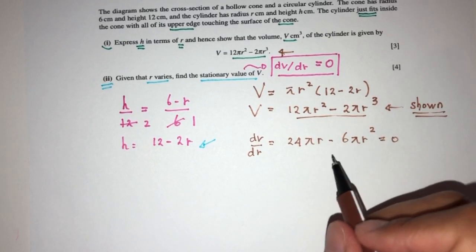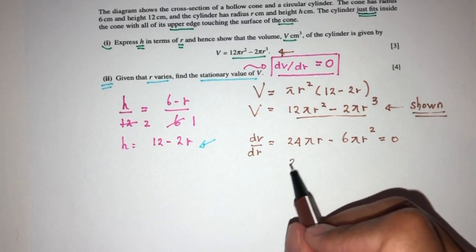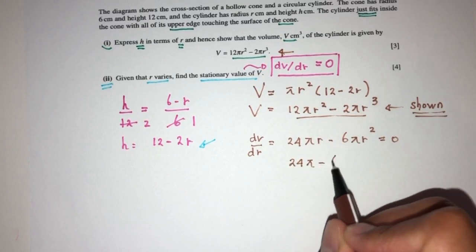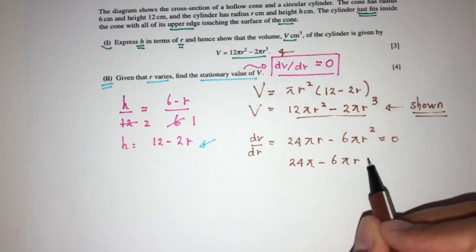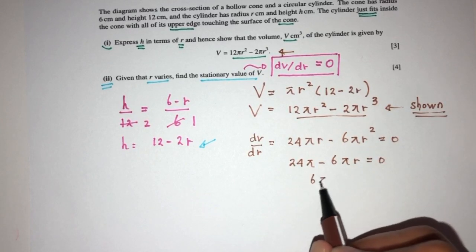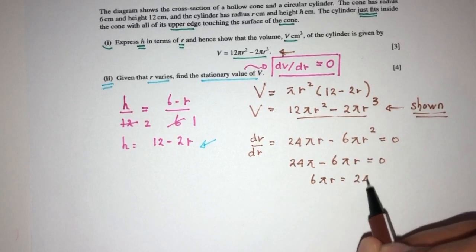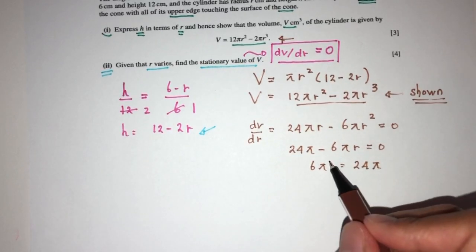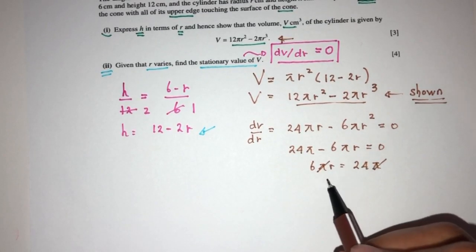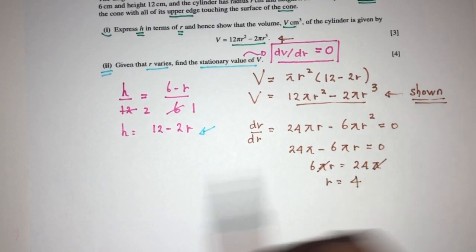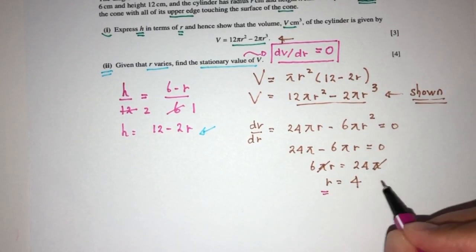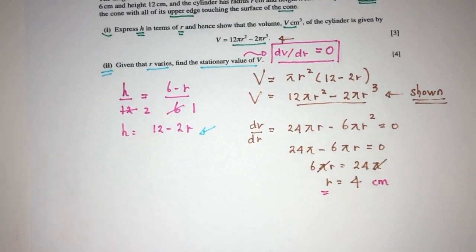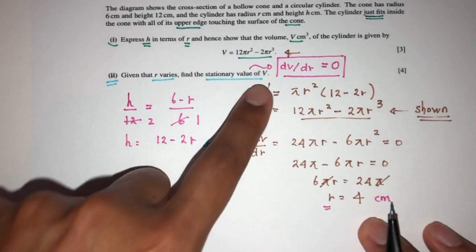First thing first, we can divide by R on both sides, you will have 24π minus 6π R equal to 0. So 6π R equals 24π. This and this will cancel out, divide by 6, that will be the value of 4. The radius here will be 4 centimeters, but that's not the value we're trying to find. We're trying to find the stationary value of V.